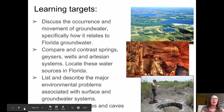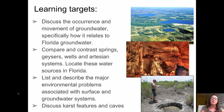Let's go back and check on our learning targets. We talked about the occurrence and movement of groundwater, specifically how it moves in Florida. We compared and contrasted springs — we didn't really talk about geysers, but we did talk about different types of well systems. We talked about some environmental problems with groundwater systems, and we looked at some karst features and caves. Please take your mastery check quiz, and I'll see you in class.